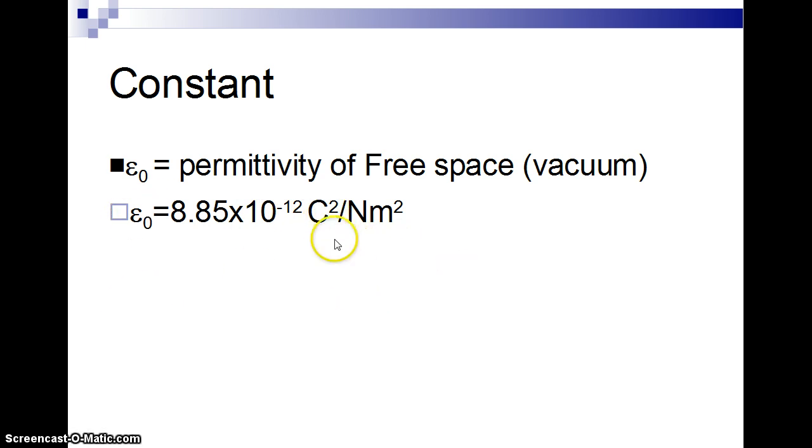And it turns out this value comes from k sub e. The electric constant, k, is 1 over 4 pi epsilon naught. Epsilon 0, epsilon naught. It's kind of the same way of expressing it.